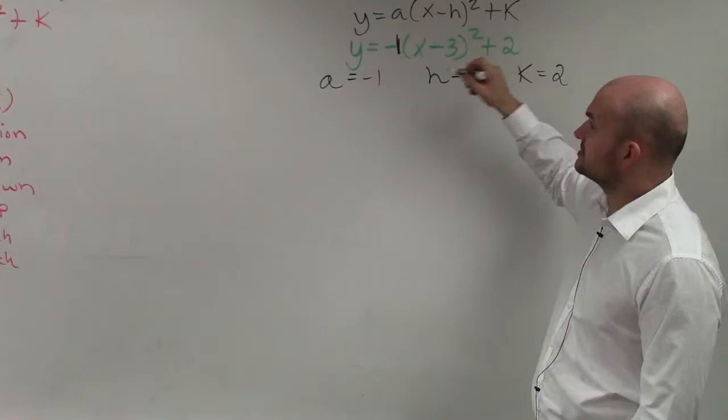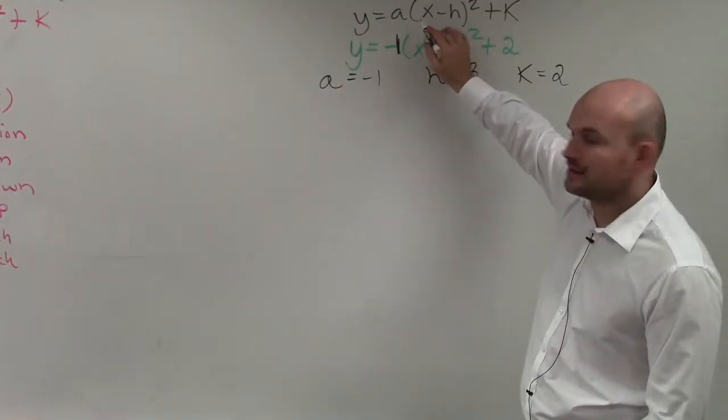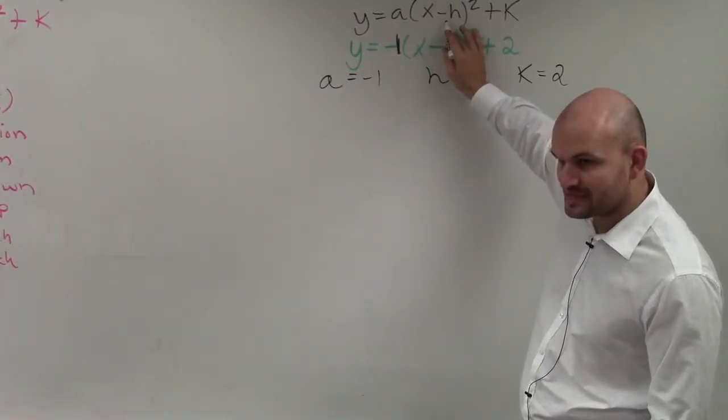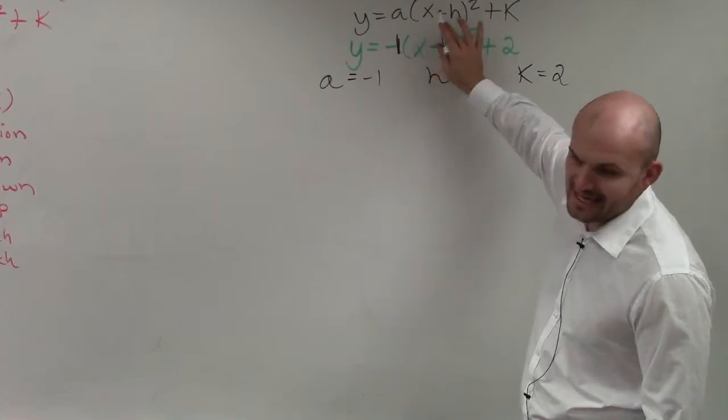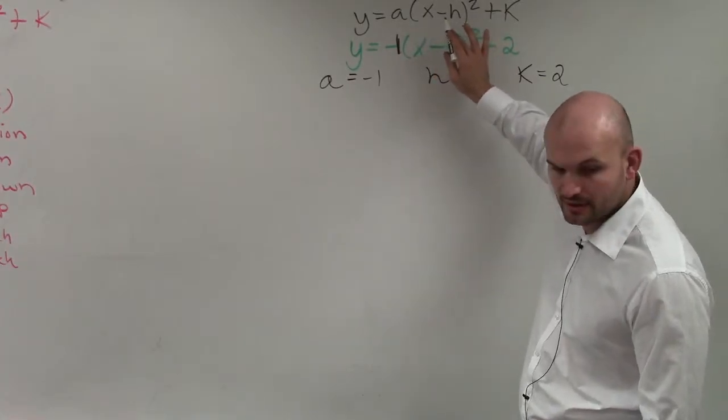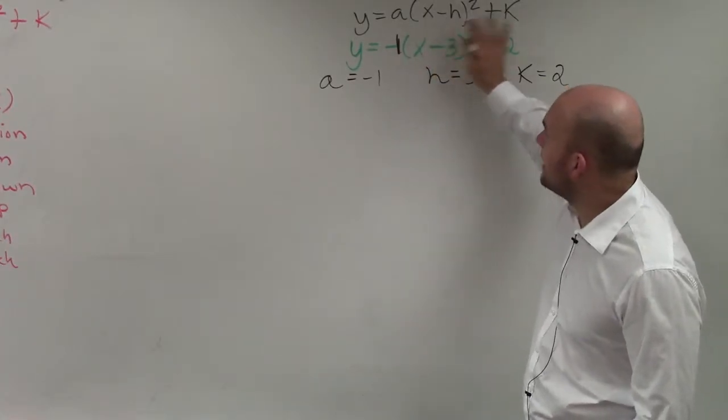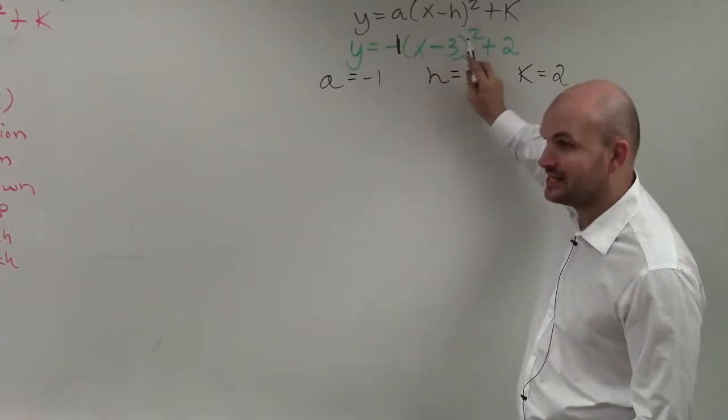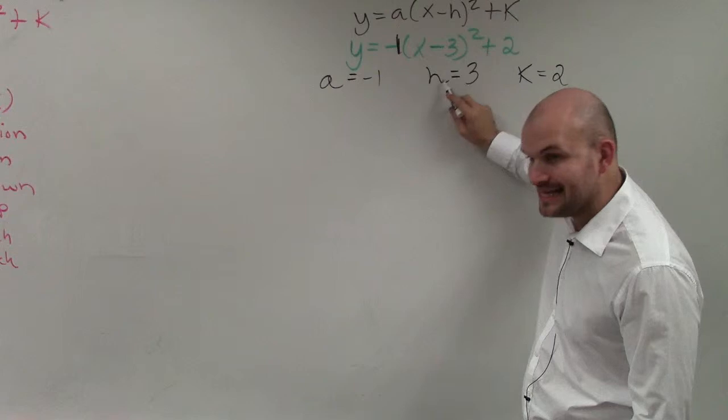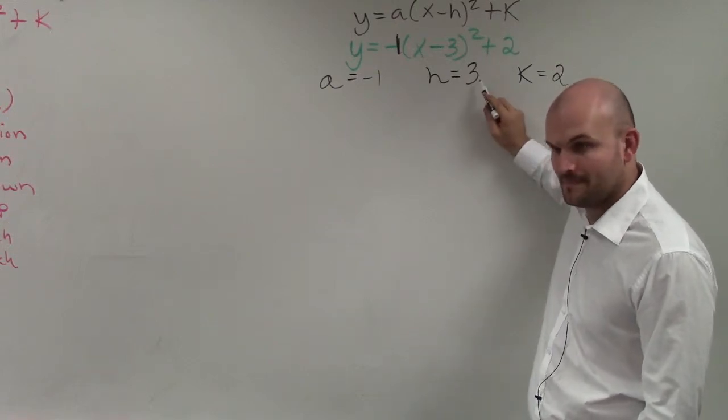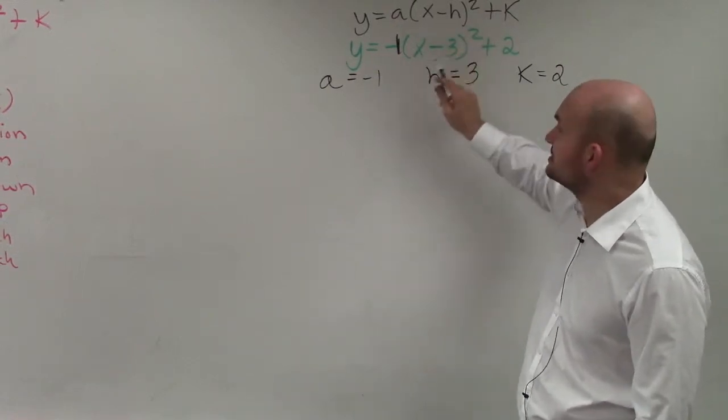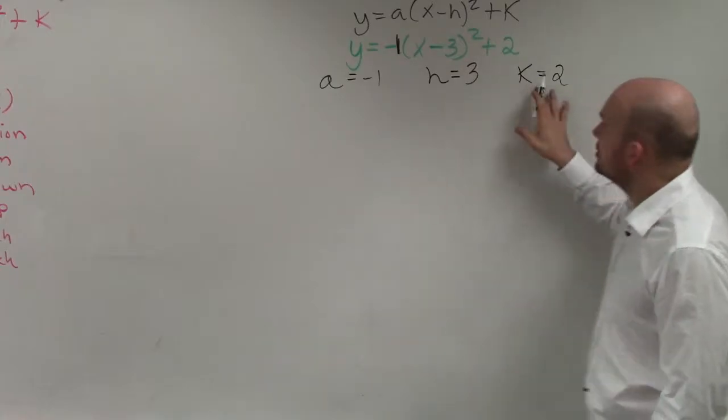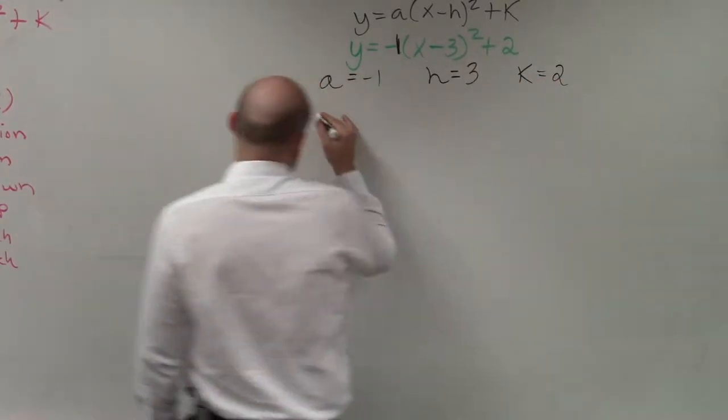So what's also important about this, guys, remember, it's x. The negative sign we represent is opposite. So it's x opposite of h. This is x opposite of 3. That means h is equal to 3, okay? Majority of students, a lot of students will make their mistake, and they'll say that's negative 3.